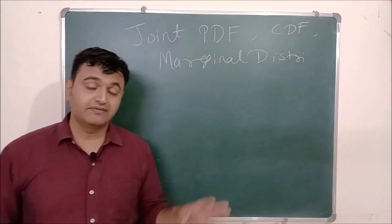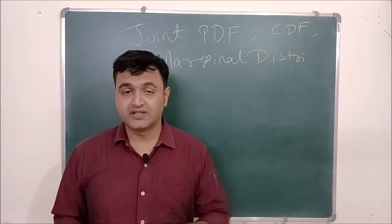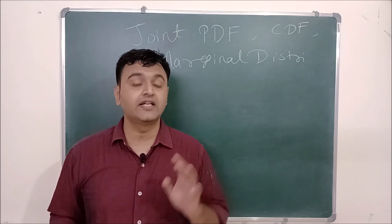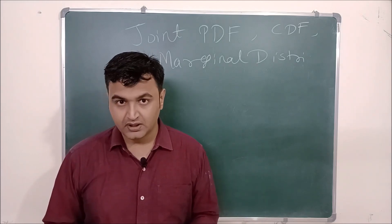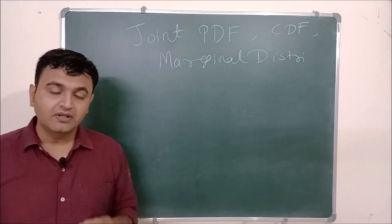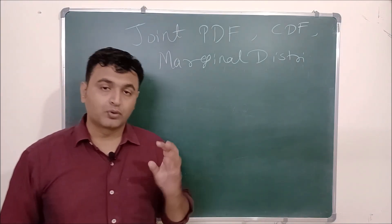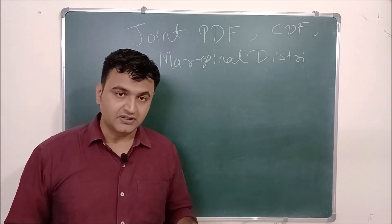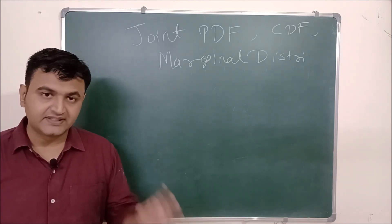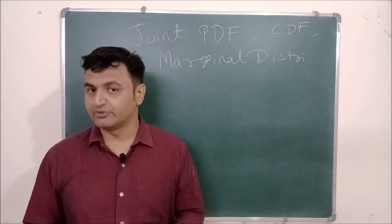In the last lecture, we talked about joint probability distribution and marginal distribution for a discrete random variable. When we have a discrete random variable, we call it the joint probability mass function, and we saw its CDF and the marginal distribution.